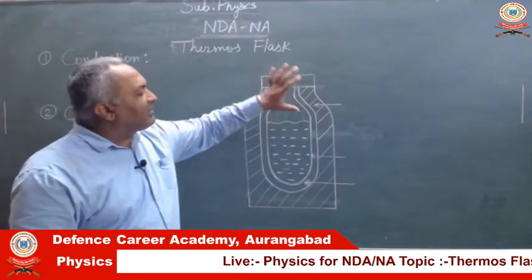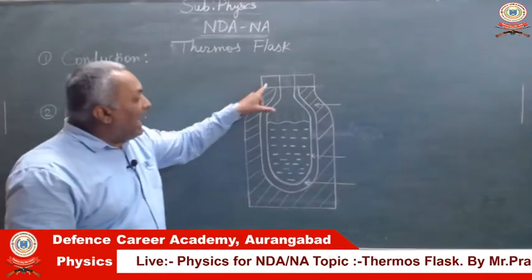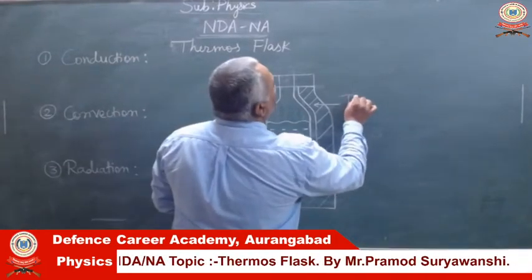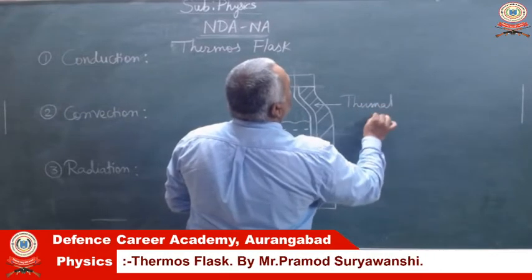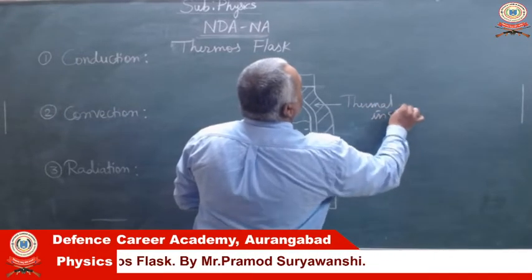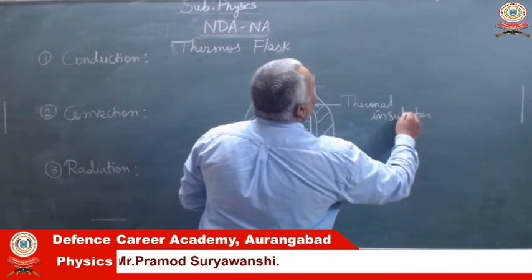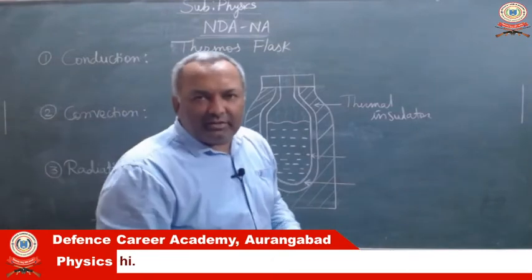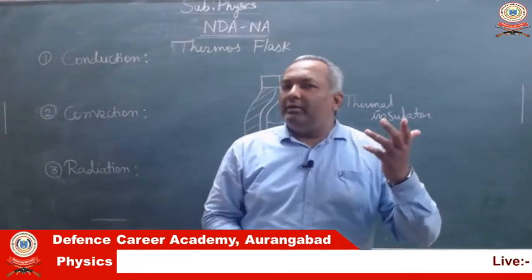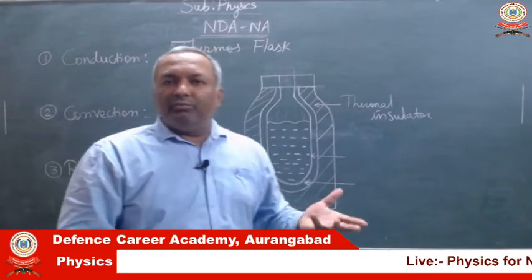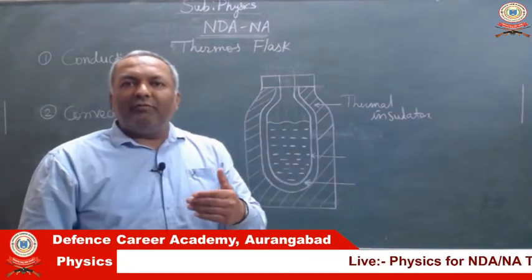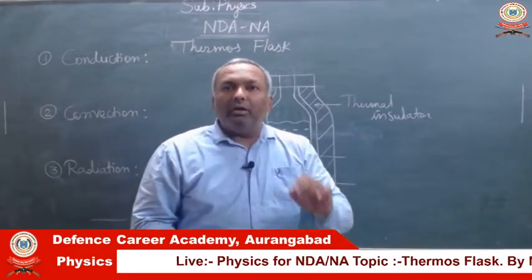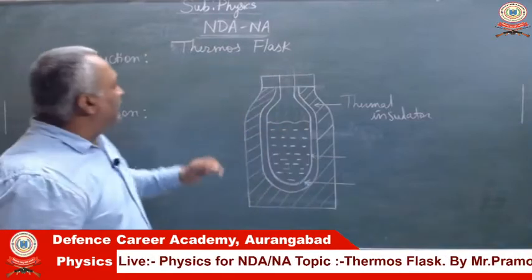A typical structure of a thermos flask is somewhat like this. The outermost layer of the thermos flask is made of a thermal insulator — that is, a bad conductor of heat. The most commonly used materials are plastic, glass wool, or some other artificial fiber, which are bad conductors of heat. By using a thermal insulator, we intend to block or slow down heat transfer due to conduction.